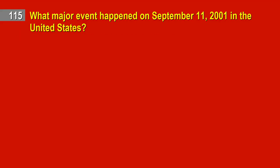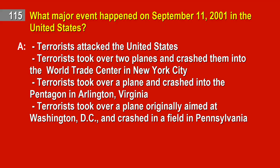Question 115. What major event happened on September 11, 2001 in the United States? Answer: Terrorists attacked the United States. Terrorists took over two planes and crashed them into the World Trade Center in New York City. Terrorists took over a plane and crashed into the Pentagon in Arlington, Virginia. Terrorists took over a plane originally aimed at Washington, D.C., and crashed in a field in Pennsylvania.